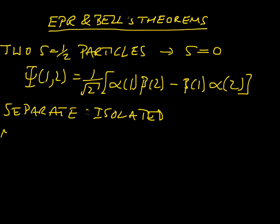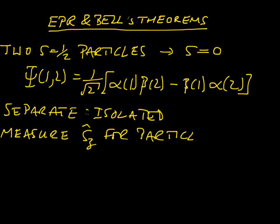Once we've done that, we measure the spin along the z-axis for one particle — we measure S z-hat for particle 1. You might assume that you've got one of the particles in a lab in London and another one in Geneva. When we measure the spin S z for particle 1, we're going to get one of two results: h-bar over 2, or minus h-bar over 2 — spin-up or spin-down — and we know we're going to get that with equal probability, a 50-50 mix.